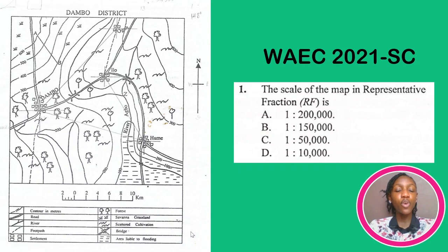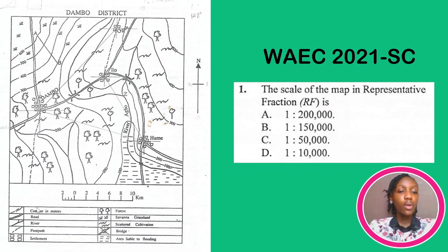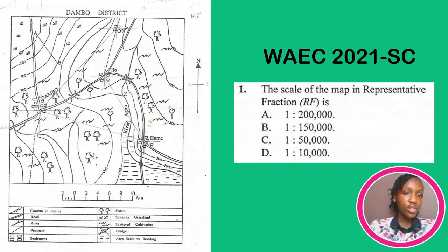The scale of the map in representative fraction is... Looking at the map we're given, we can see that just above the key and under the map, the map scale we're given is in a linear graph. They want us to convert a linear graph to representative fraction — that's simply what they are saying.